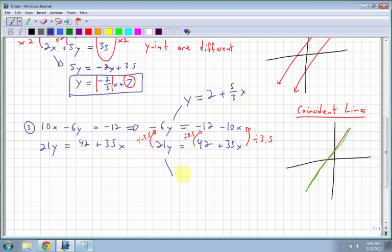Same thing with this one. I'm going to divide by 21. So I get y is equal to 42 divided by 21 is 2. And then 35 and 21 have 7 in common. 7 goes into 35 five times, 7 goes into 21 three times x. So notice that when I solve for y equals for both these lines, they're exactly the same. Because when I reduce the fraction down, I get the same slope. And when I divide by that value in front of y, I also get the same y-intercept.